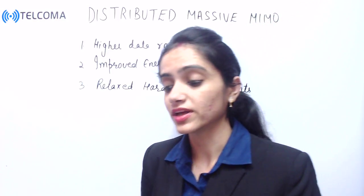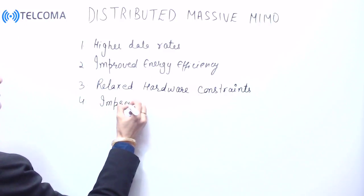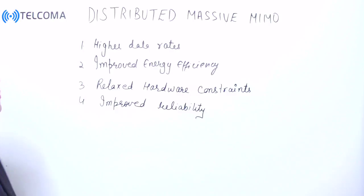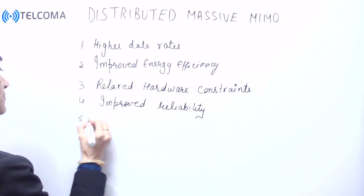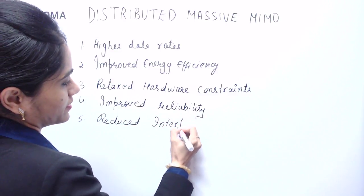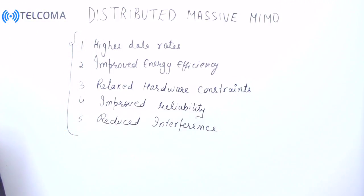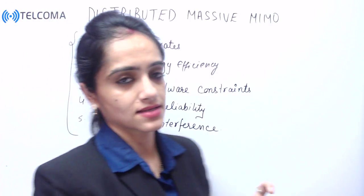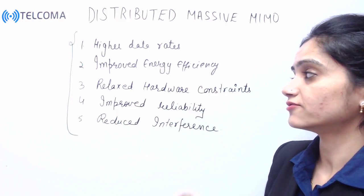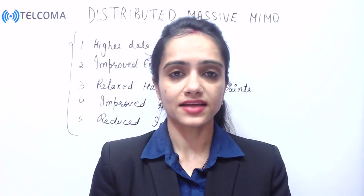In distributed massive MIMO, we also have improved reliability and reduced interference. So these are the basic principles of distributed massive MIMO: data rates increase, energy efficiency improves, we don't need to spend more money on hardware, reliability is improved, and interference is reduced. Thank you so much.